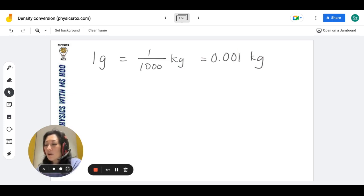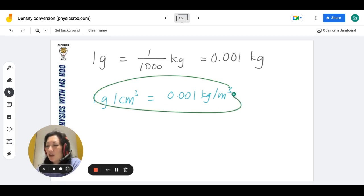So a lot of students always see this, and that's why they automatically think, oh, by right, 1 gram per cm³ should be 0.001 kilogram per meter cube. If you're thinking this, that means you have not fully understood the concept of conversion in physics and math.